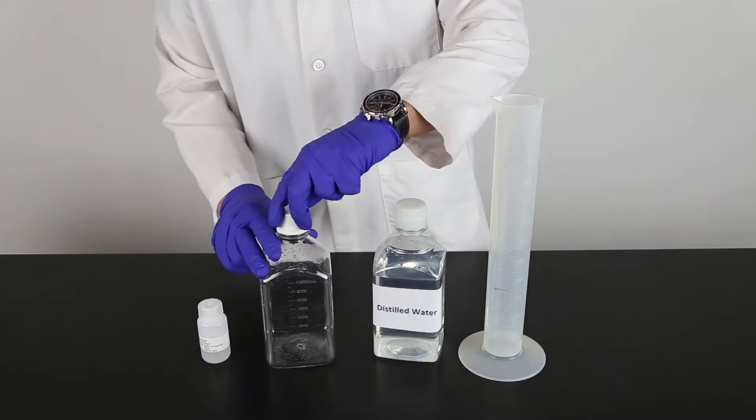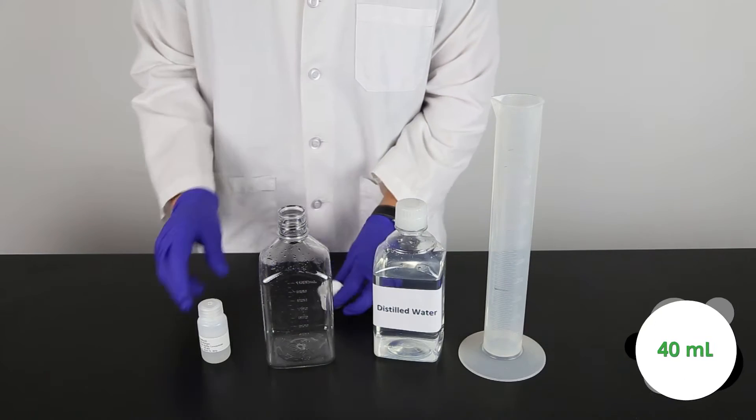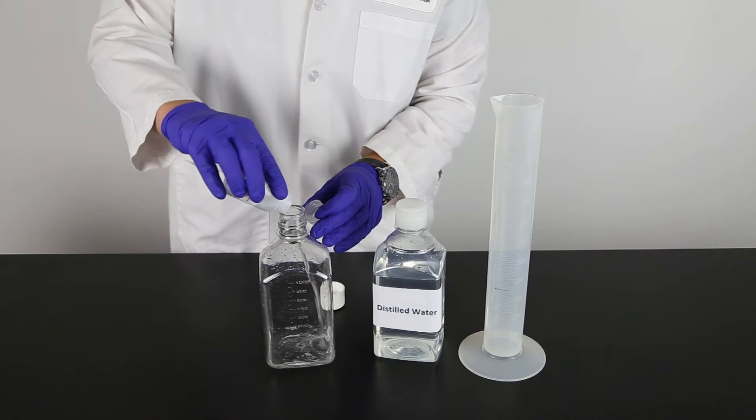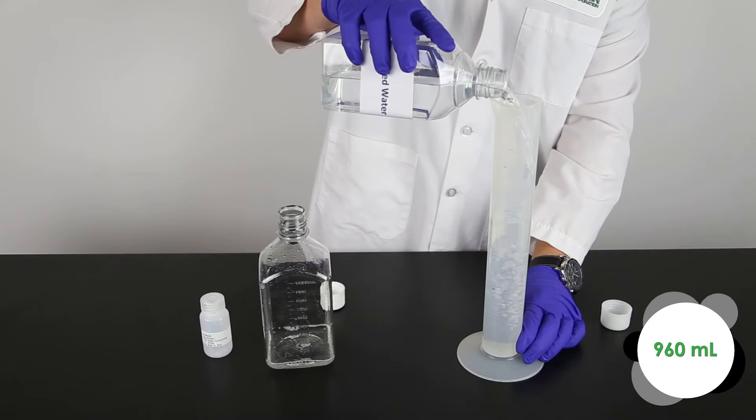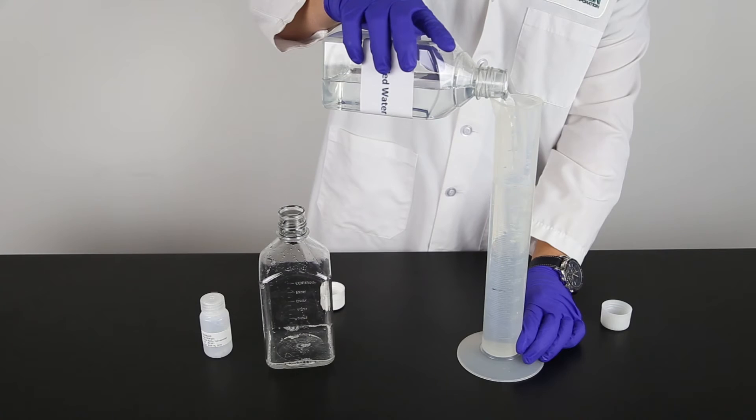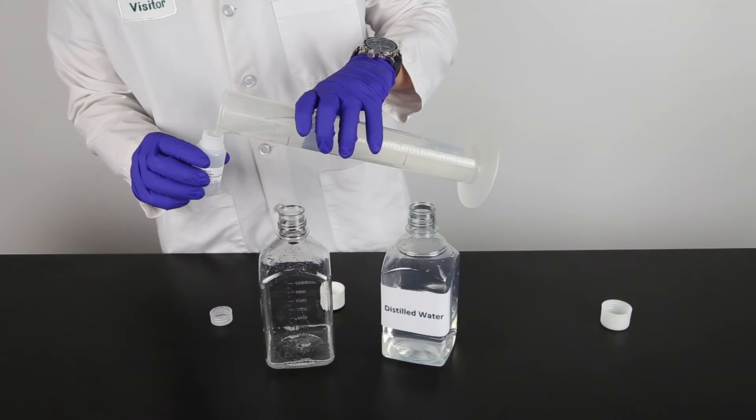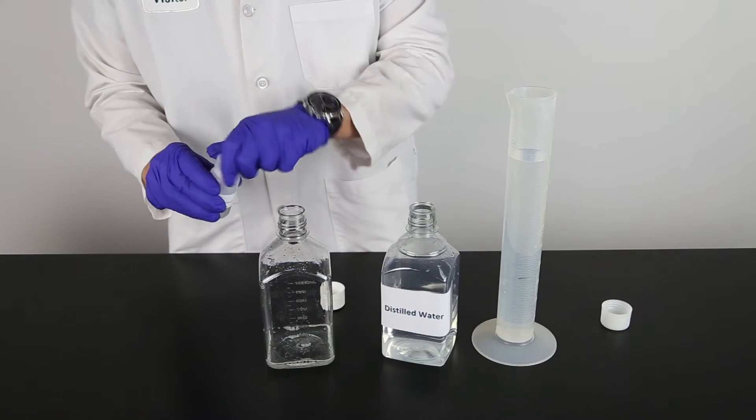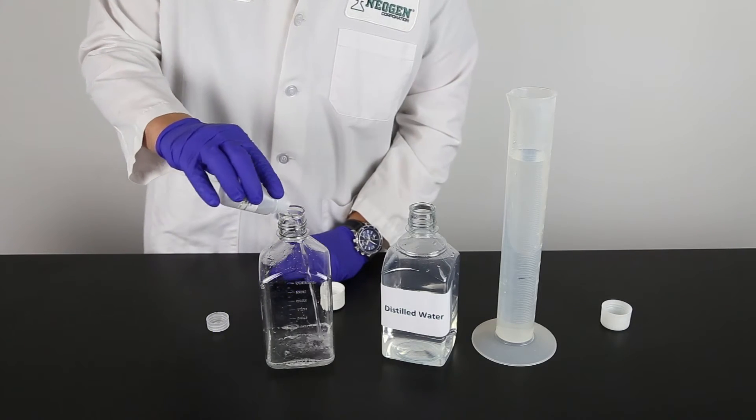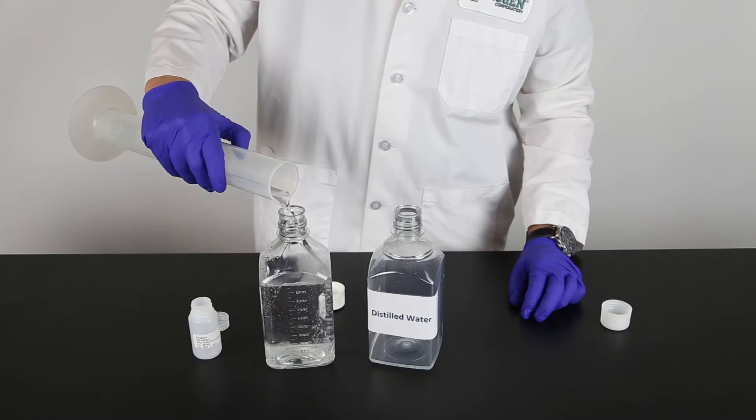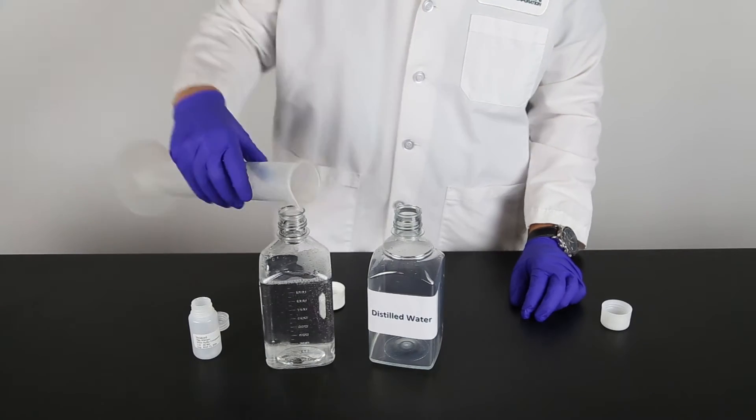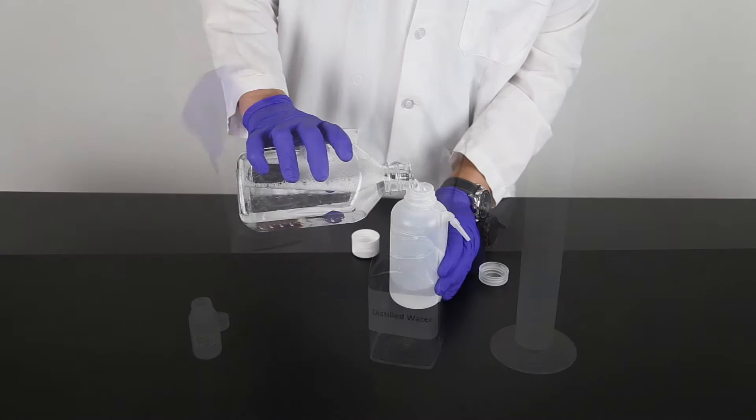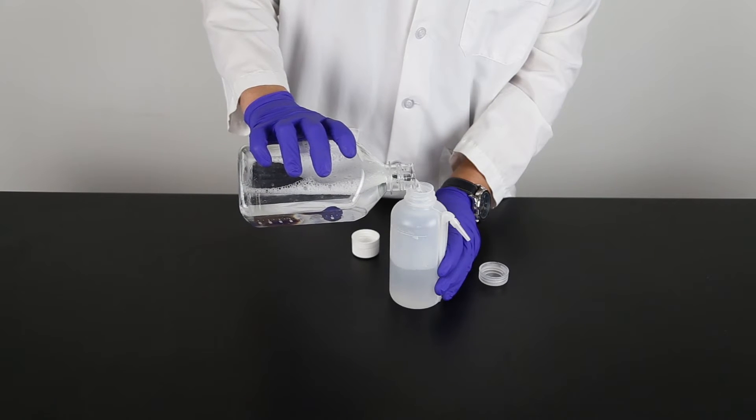Prepare wash buffer solution by pouring the 40 milliliters of wash buffer concentrate into a 1 liter bottle. Measure 960 milliliters of distilled or deionized water. Pour some water into the wash buffer bottle to rinse and add to the 1 liter bottle. Pour remaining water into the bottle, cap and mix. Transfer wash buffer to a squeezeable wash bottle.